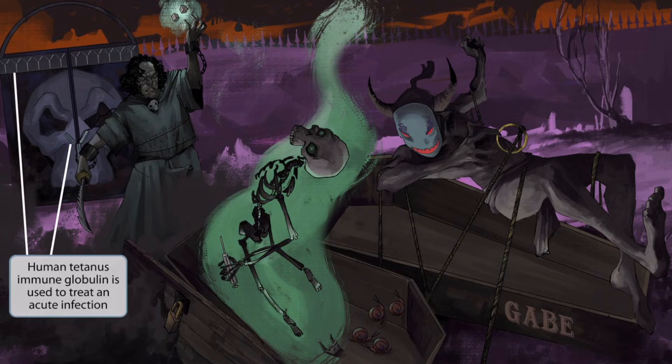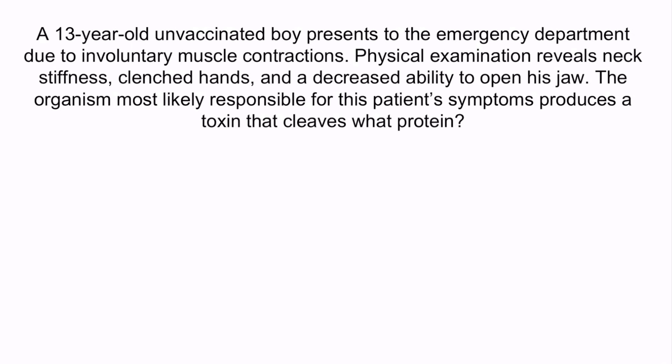Now that we've covered the image, let's wrap up this section with a question. A 13-year-old unvaccinated boy presents to the emergency department due to involuntary muscle contractions. Physical examination reveals neck stiffness, clenched hands, and a decreased ability to open his jaw. The organism most likely responsible for this patient's symptoms produces a toxin that cleaves what protein? Hopefully from the question stem, you notice that this boy is presenting with signs and symptoms consistent with Clostridium tetani. The fact that he's unvaccinated and is having involuntary muscle contractions should immediately make you think of Clostridium tetani. The decreased ability to open his jaw is alluding to lockjaw, which is a dead giveaway. As we just discussed, this organism produces tetanospasm, which cleaves snare proteins. So the answer is snare proteins.